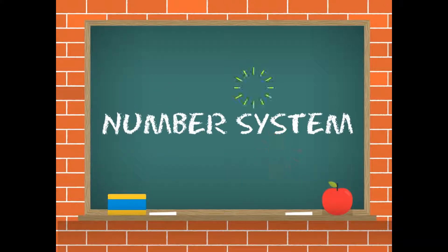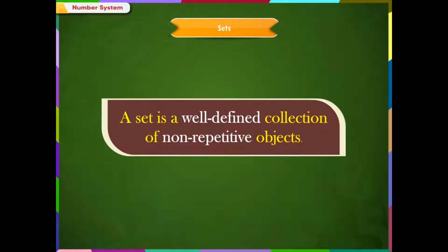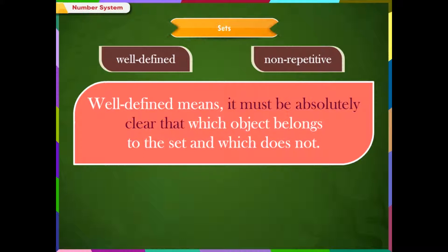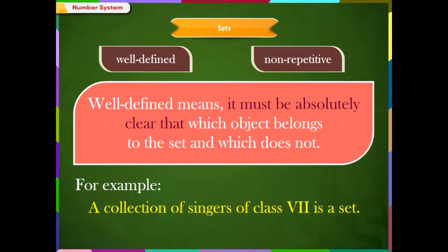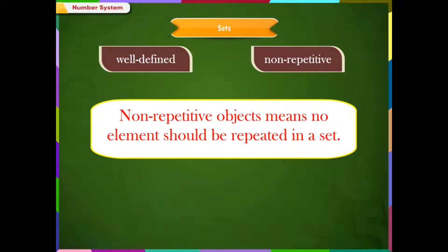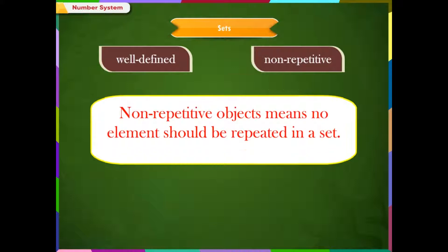Number System. A set is a well-defined collection of non-repetitive objects. Well-defined means it must be absolutely clear which object belongs to the set and which does not. For example, a collection of singers of class 7 is a set. Non-repetitive objects means no element should be repeated in a set.